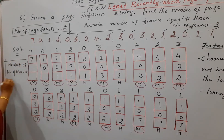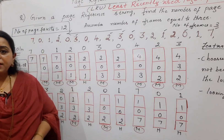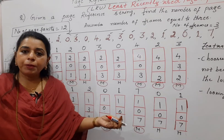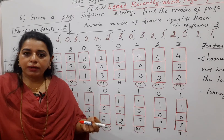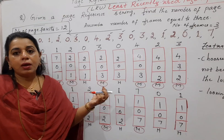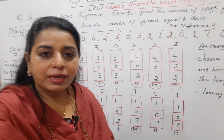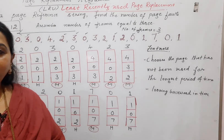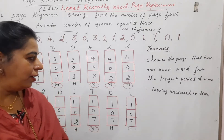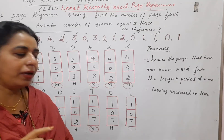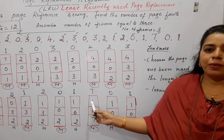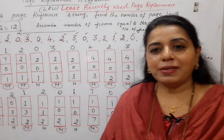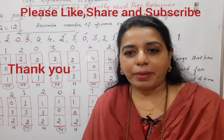This is how you solve the Least Recently Used page replacement algorithm. The difference between optimal and LRU is that optimal looks forward in time, whereas LRU looks backward in time. The key feature: it chooses the page that has not been used for the longest period of time. If you find this session useful, please like, share, and subscribe to my channel. Thank you, bye bye, take care.